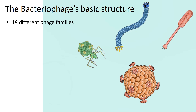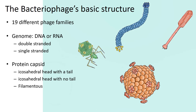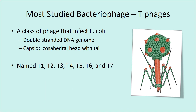All bacteriophages are currently classified into 19 different families. Their genomes consist of either DNA or RNA, with the majority of them being DNA. In fact, only two of the 19 families have RNA genomes. The genomes are either double-stranded or single-stranded, and their capsids consist of icosahedral heads with or without tails, or they are filamentous. Five families are known to have members with envelopes surrounding their nucleocapsids. So like other viruses, bacteriophage are very diverse in their morphology.